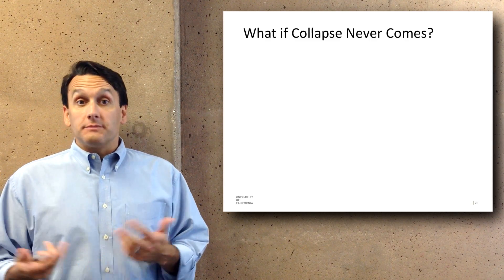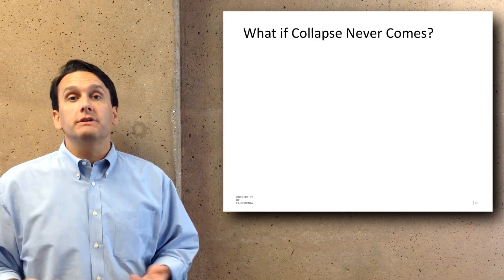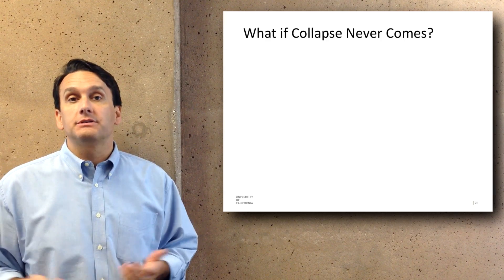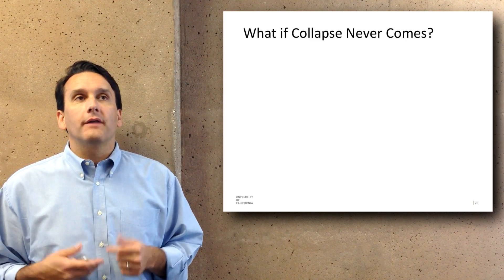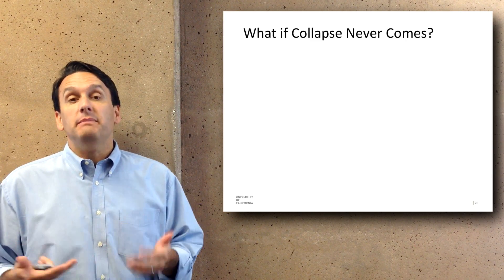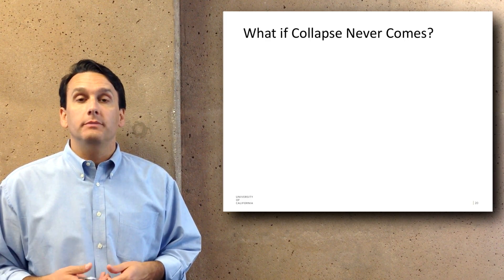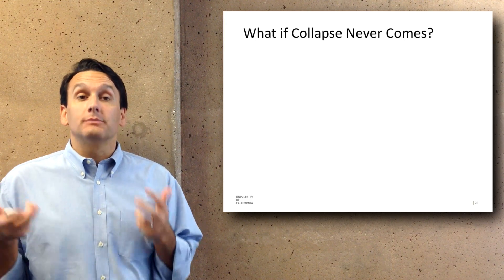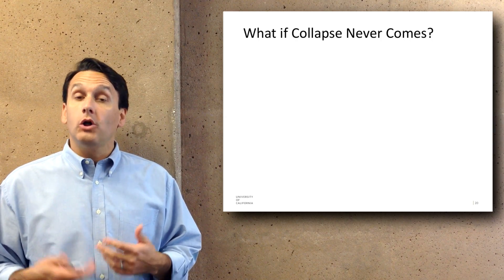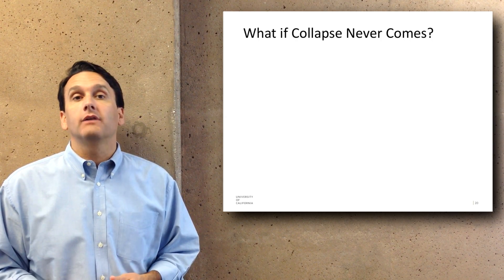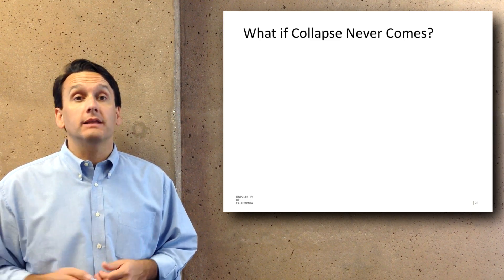One concern that often comes up is: what if collapse never comes? It's a reasonable concern, but we wonder whether taking these actions may be part of what prevents collapse from coming — so we may never be able to know whether collapse would have been on its way. Ultimately, the kinds of things we'll do to prepare for collapse, even if it never comes, will hopefully allow us to live more sustainably with a higher quality of life and lower resource usage. So even if collapse never comes, hopefully it's making the world a better place anyway.